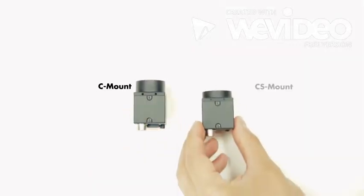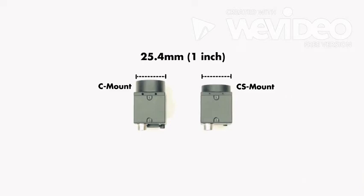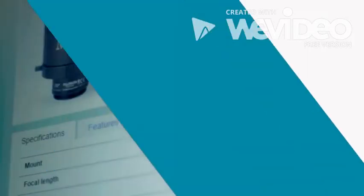Here's a quick video showing you the difference between the two most common machine vision camera lens mounts. Here on the left we have a C mount camera and on the right a CS mount camera. Both mounts have a 1 inch diameter but the flange back distances are different: 17.526 millimeters for C mount and 12.5 millimeters for CS mount.